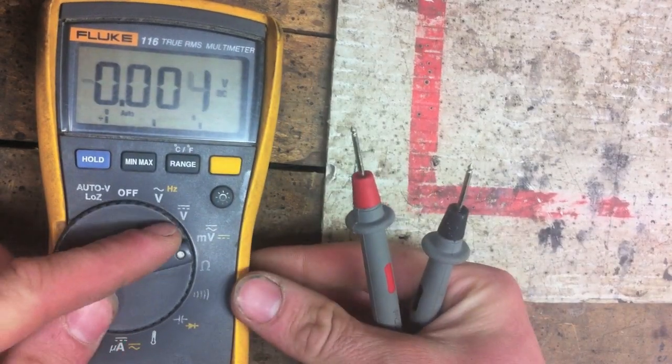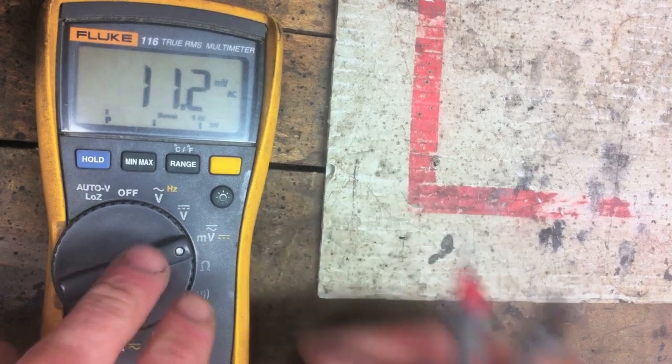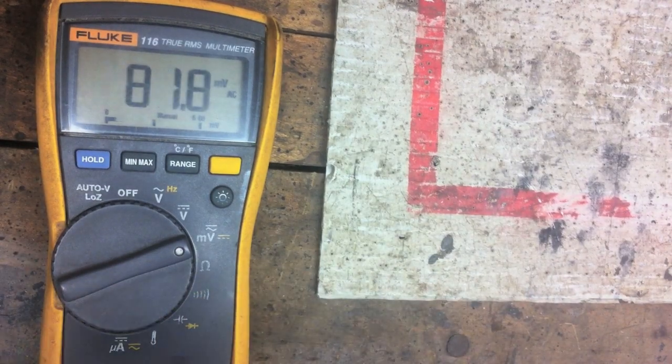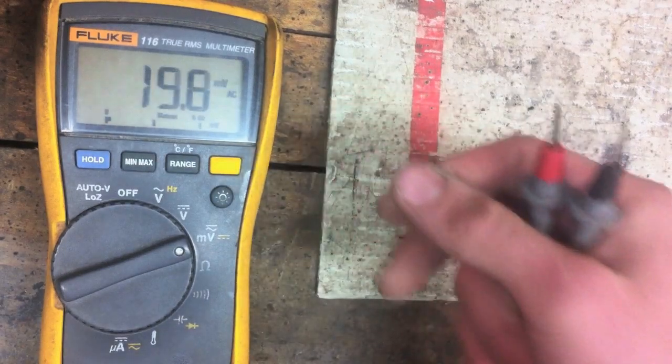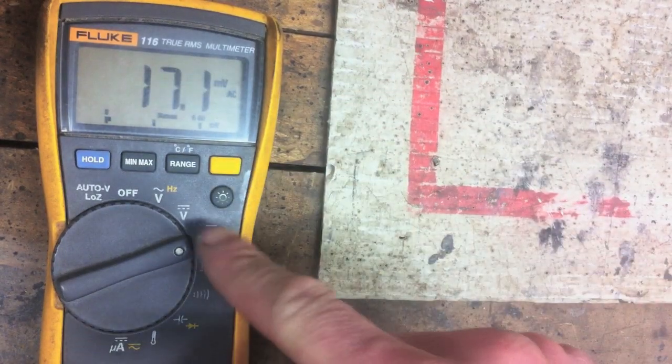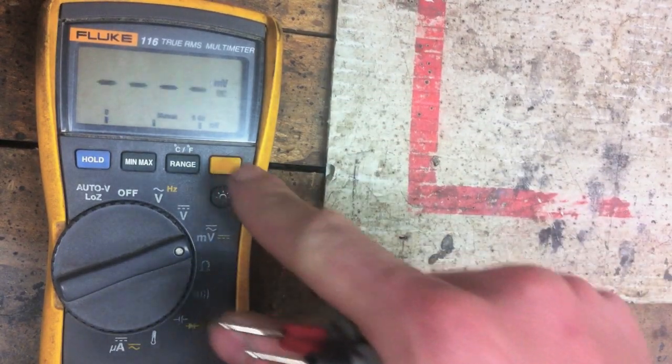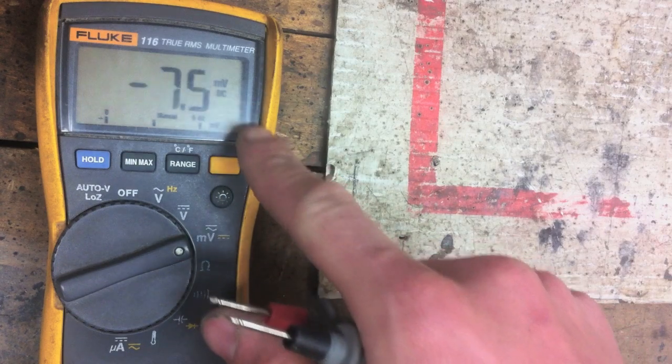It'll do millivolts AC and DC. This is good for checking voltage for like flame rectification. Stuff like that. Again if you want to do the volts DC you would just press this and now you're doing millivolts DC.